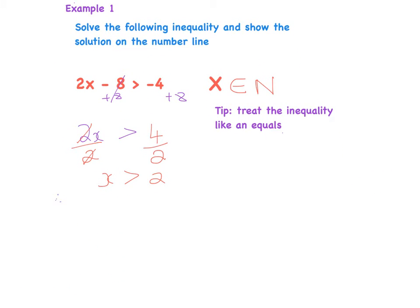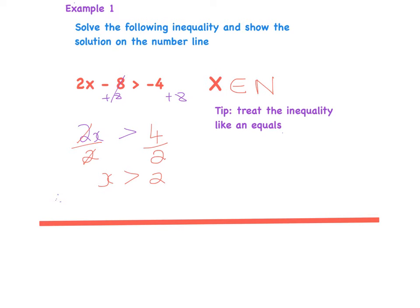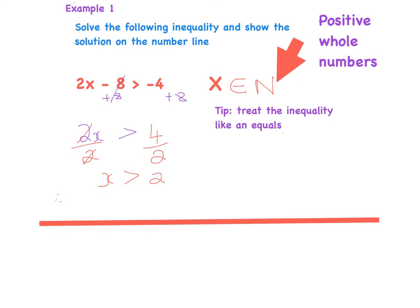Now I can draw that on my number line. Your number lines need to be nice and clear and measured correctly so the examiner knows you understand. Before we draw, we have to look at this: x is an element of ℕ, the natural numbers. The two properties of natural numbers are that they are positive and they are whole.